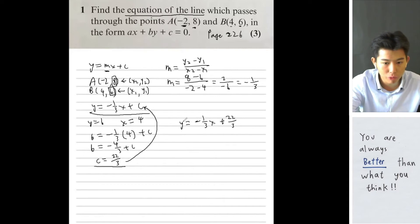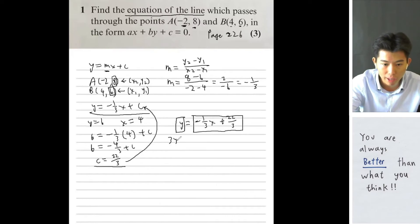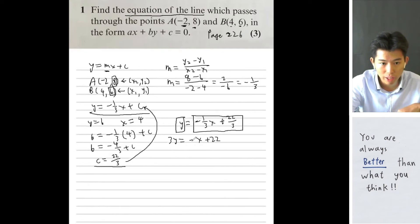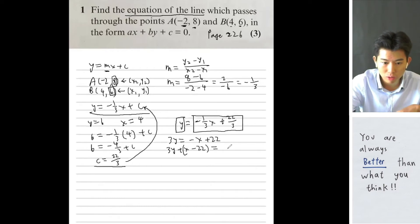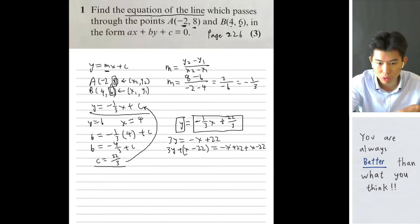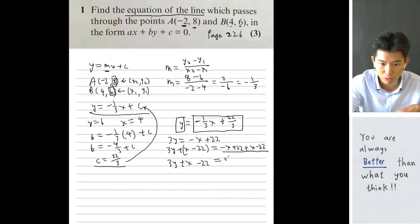Multiply both sides by 3 to get 3y equals minus x plus 22. Adding x to both sides and subtracting 22 from both sides gives x plus 3y minus 22 equals 0. This is in the form ax plus by plus c equals 0, where a equals 1, b equals 3, and c equals minus 22.